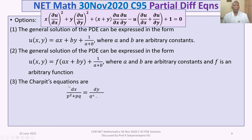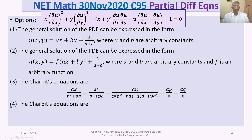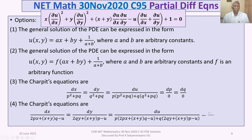Option three: the Charpitt's equations are dx/(p² + bq) = dy/(q² + bq) = du/(p(p² + bq) + q(q² + bq)) = dp/0 = dq/0. Option four: the Charpitt's equations are dx/(2px + ...) with dp/0 = dq/0.